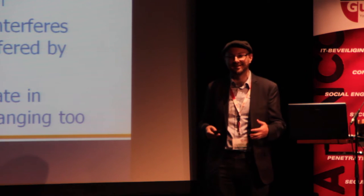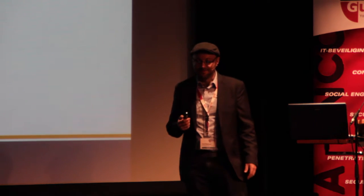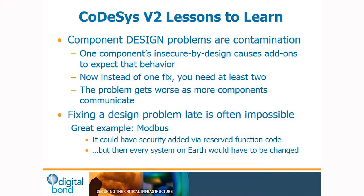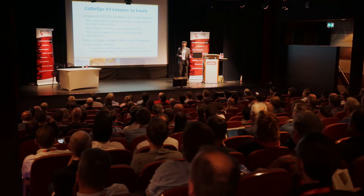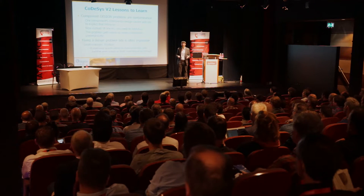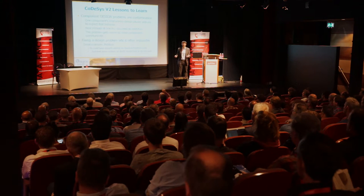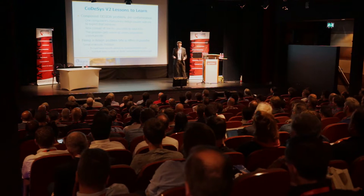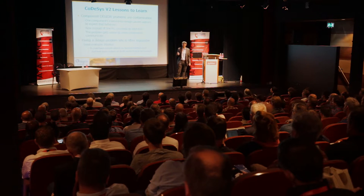Once you have an insecure-by-design issue, it contaminates everything that has to communicate with it. The CODESYS version 2 application is literally code injection with administration privileges and no authentication. In the industrial world, we have many examples of insecure-by-design protocols — one classic is Modbus, which lets you read and write status to a PLC. You could add a password mechanism to it, but just like with CODESYS, you'd then have to update almost all industrial software on the planet to understand it, which probably isn't going to happen.